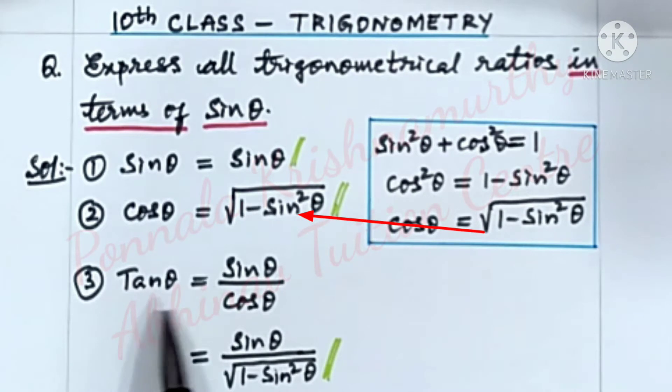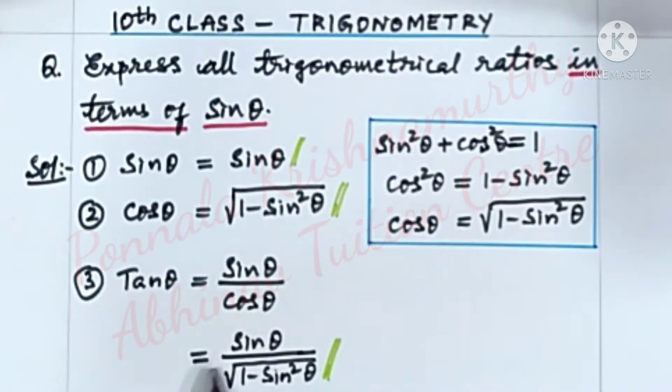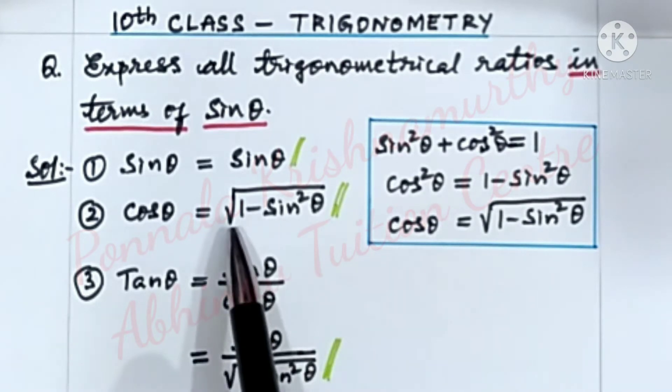Tan theta is equal to sin theta by cos theta. In place of cos theta,